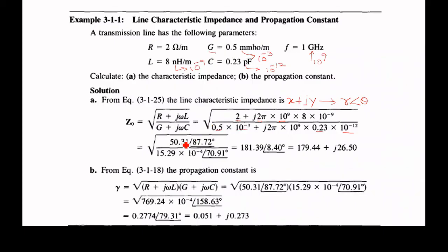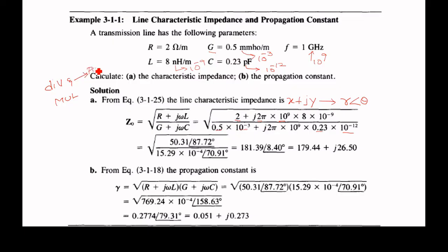If you multiply and substitute, you will get this value for the numerator: it is 50.31 at an angle of 87.72 degrees. Similarly, the denominator can also be converted into polar form: it is 15.29 into 10 power minus 4 at an angle of 70.91 degrees. Division and multiplication are easy to carry out in polar form.